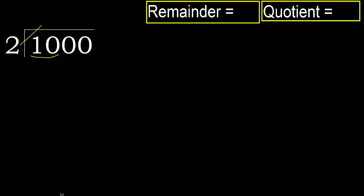2 multiplied by which number is nearest to 10, but not greater? 2 multiplied by 6 is 12 — 12 is greater. Multiply by 5: 10 is not greater. 10 minus 10 is 0.